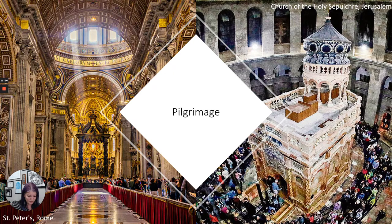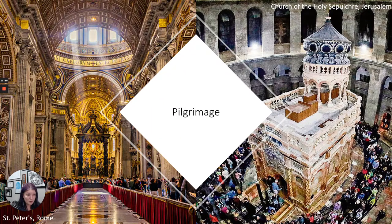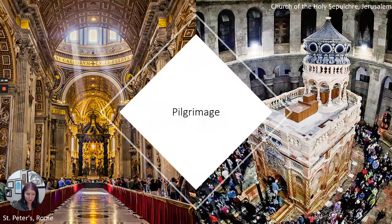The two biggest pilgrimage destinations were St. Peter's in Rome and the Holy Sepulchre in Jerusalem, but most people didn't have the money or time to travel that far from Western Europe. So a bunch of other pilgrimage sites became popular and started popping up all over Western Europe. These were sources of income for the affiliated monastery, abbey, church community, or city.